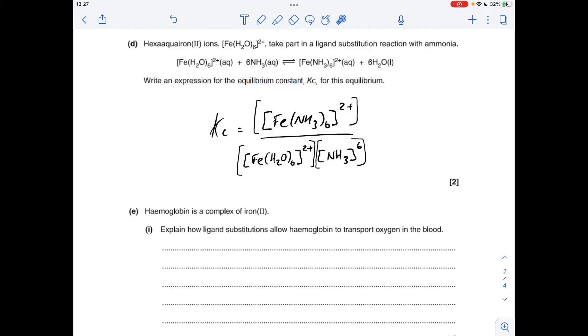Part E, so we're told haemoglobin's a complex of iron(II), that's key when it comes to this answer. Explain how ligand substitutions allow haemoglobin to transport oxygen in the blood. We need to say something like oxygen binds to the Fe2+, remember it's iron(II), in haemoglobin and that's then carried to the cells where the oxygen substitutes for water. I've checked the mark scheme and you are actually allowed to say the oxygen substitutes for carbon dioxide, but technically it is water that substitutes with the oxygen at the cells.